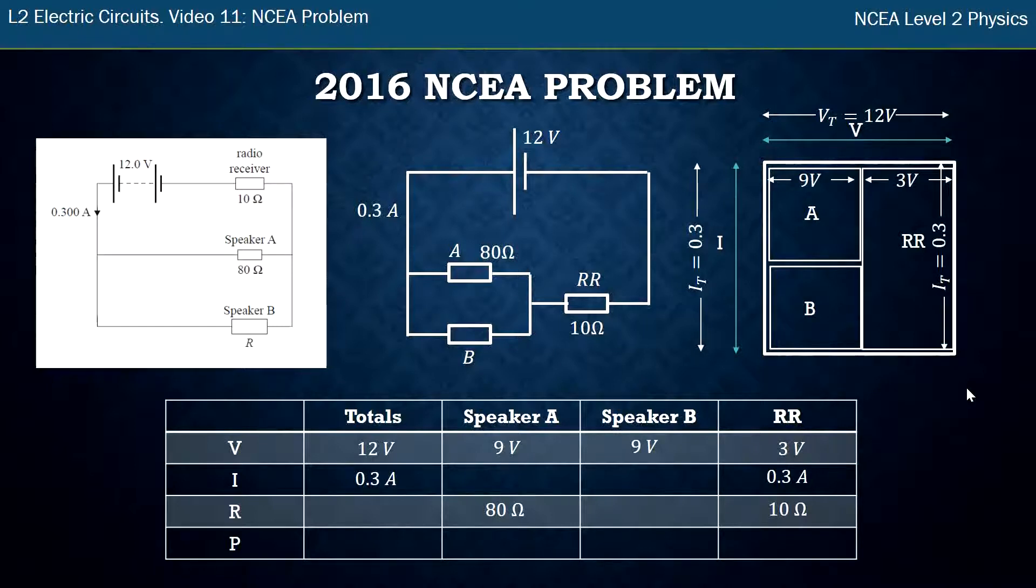Alright so the next one I probably work out this power. No I'm going to work out maybe speaker A. So V equals IR. I've got the 9 volts and the 80 ohms. Rearrange it and I get 9 volts divided by 80. Which is 0.11. Put that value on. I'm not going to round it for now because I'm going to use the value a bit later.